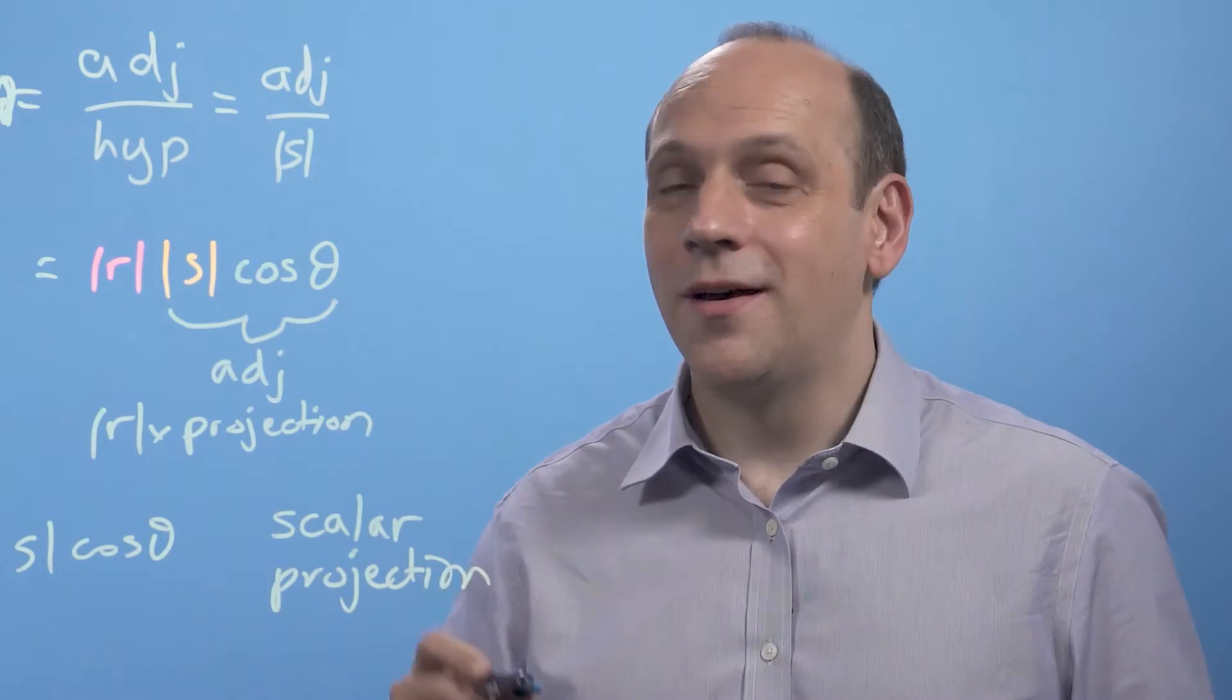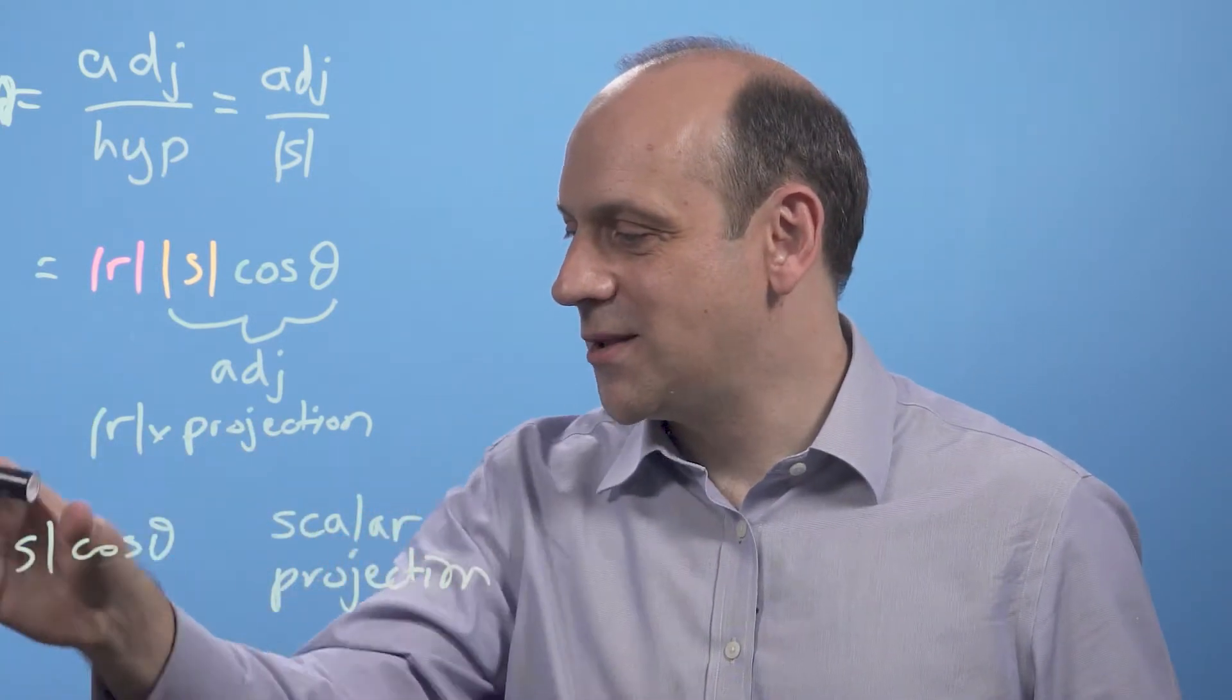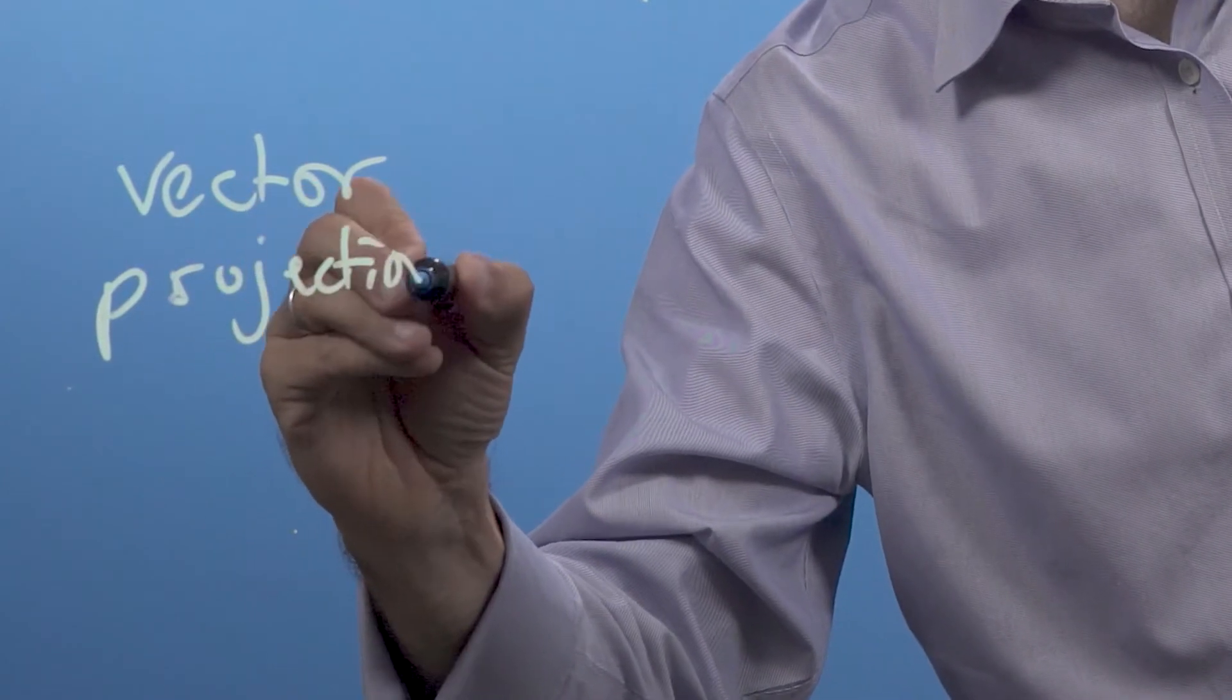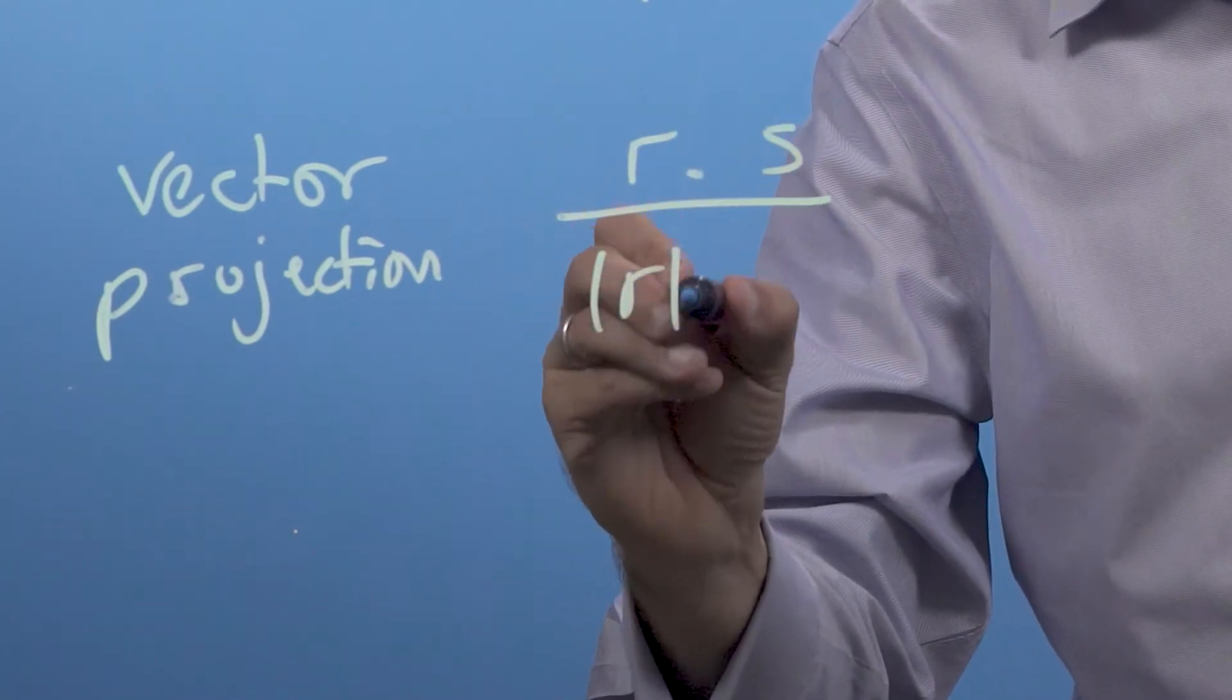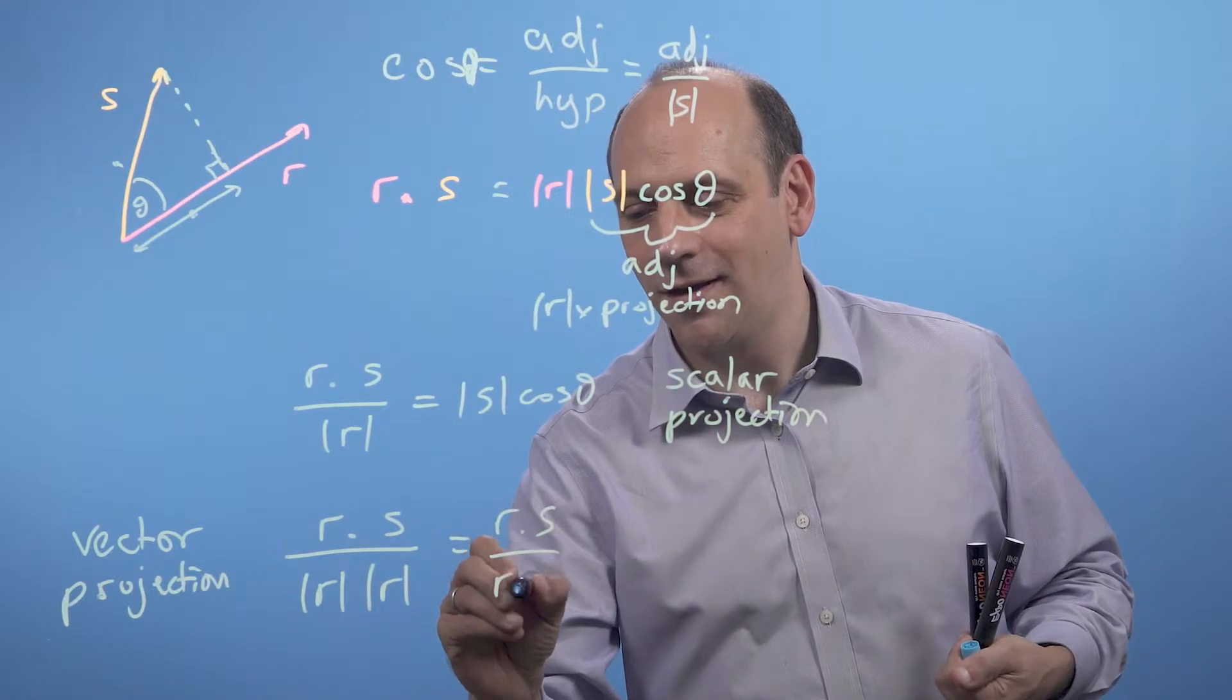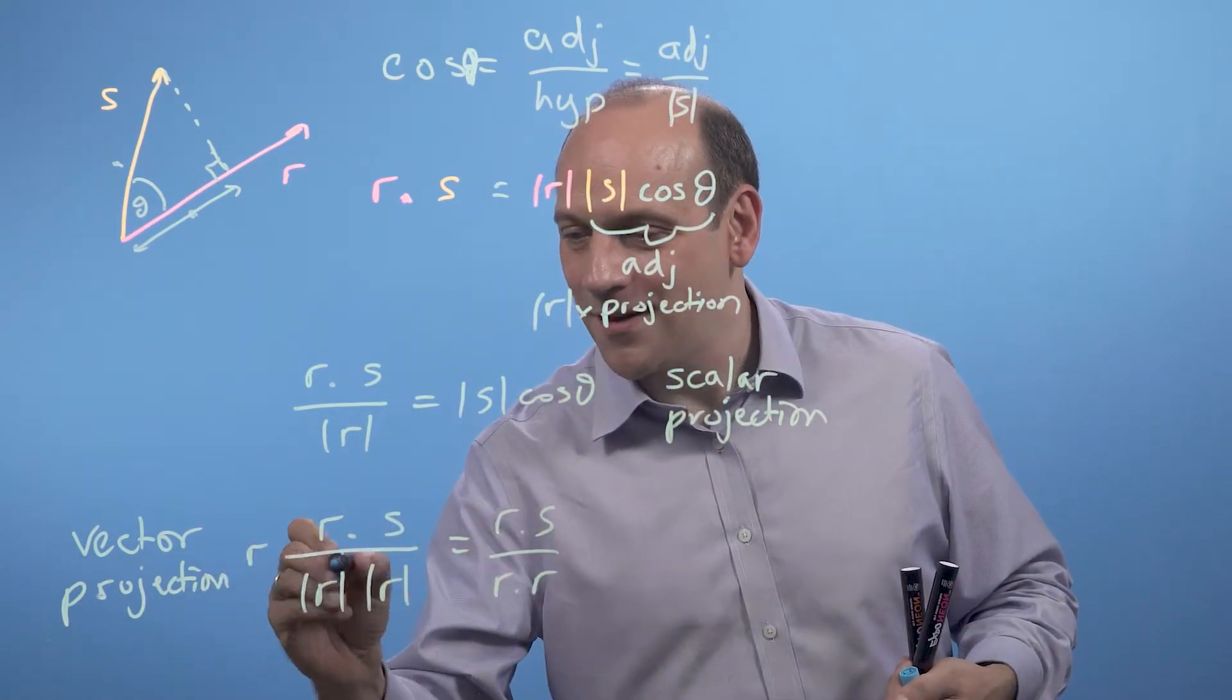Now, if I want to remember to encode something about r, which way r was going into the dot product or into the projection product, I could define something called the vector projection. And that's defined to be r dot s over mod r dotted with itself, so r dot r mod r squared. So that's r dot s over r dot r, if you like, because mod r squared is equal to r dot r. And we multiply that by the vector r itself.